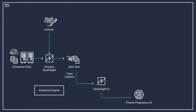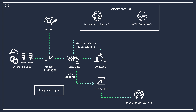Amazon QuickSight Q, powered by machine learning, uses natural language processing to answer your business questions quickly. Q topics are a collection of one or more data sets that represent a subject area that your business users can ask questions about. To turn on questions for your data set, you have to create a topic. You can leverage natural language to build analysis and visualizations based on the data powered by Amazon Bedrock. Business analysts can use this capability by choosing Ask Q and describing the data they would like to see using natural language.